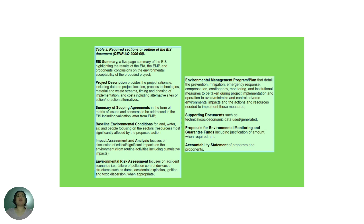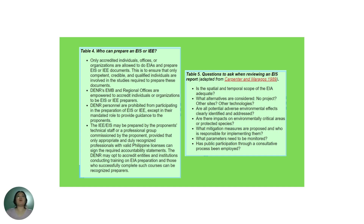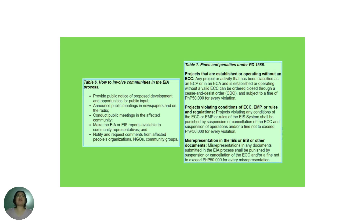Table 3 covers the required sections or outline of the EIS document, including the EIS summary, baseline environmental conditions, and accountability statement. Table 4 addresses who can prepare an EIS or IEE — only accredited individuals, offices, or organizations are allowed to prepare EIS or IEE documents. Table 5 lists questions to ask when reviewing an EIS report, such as whether the spatial and temporal scope of the EIA is adequate. Table 6 covers how to involve communities in the EIA process, and Table 7 outlines the fines and penalties under PD 1586.